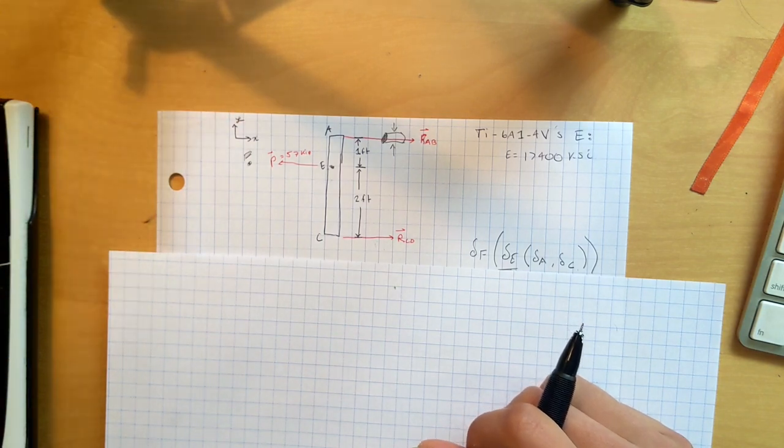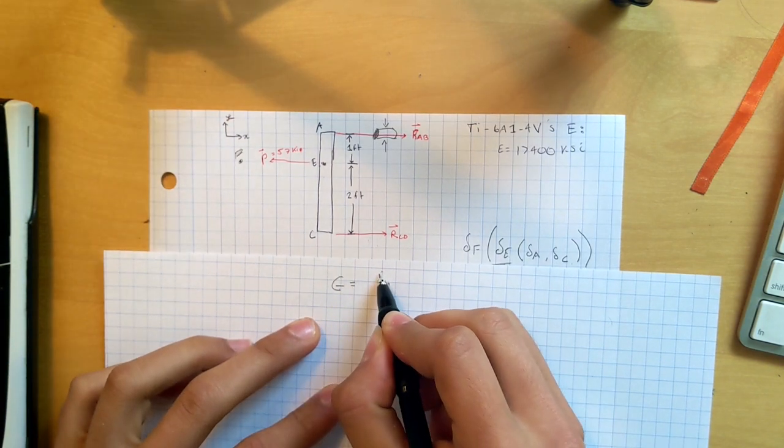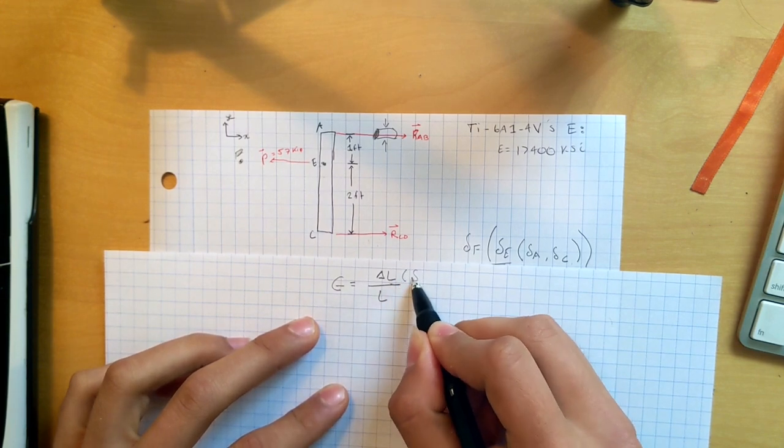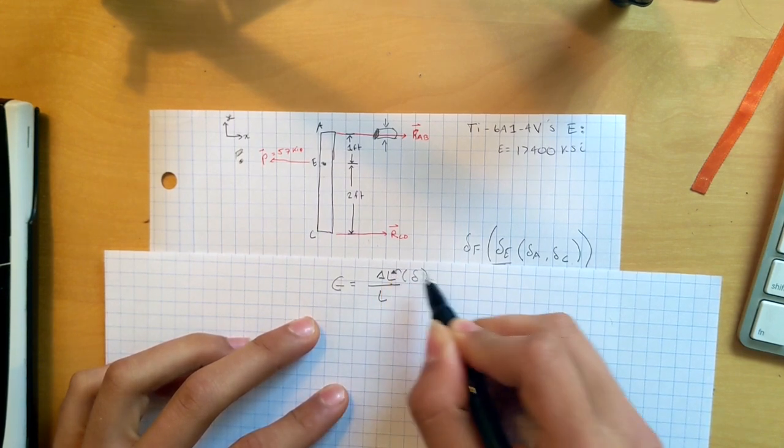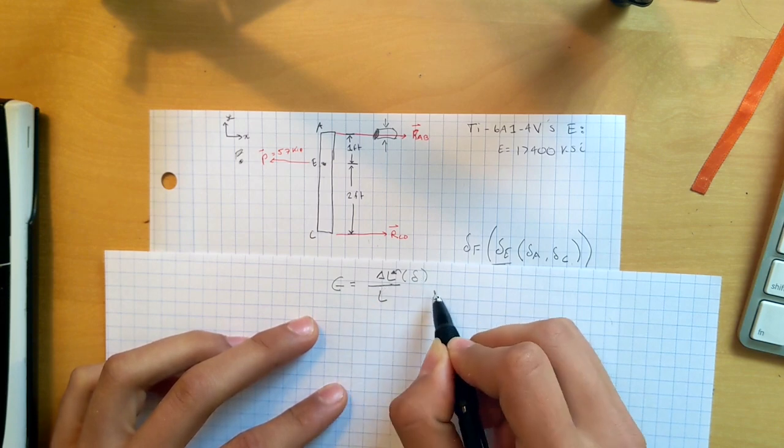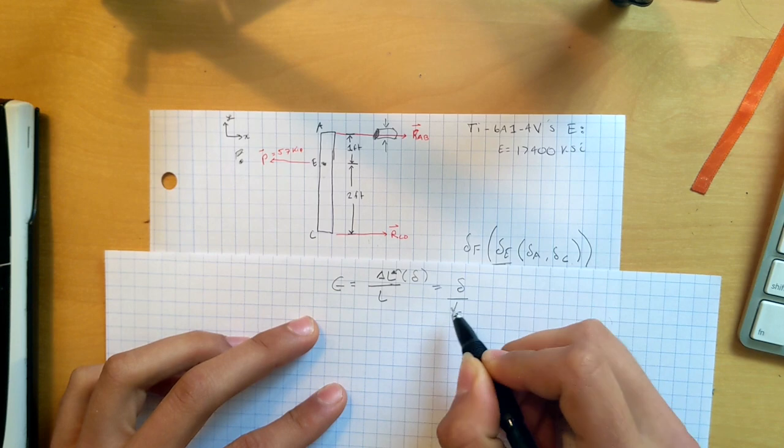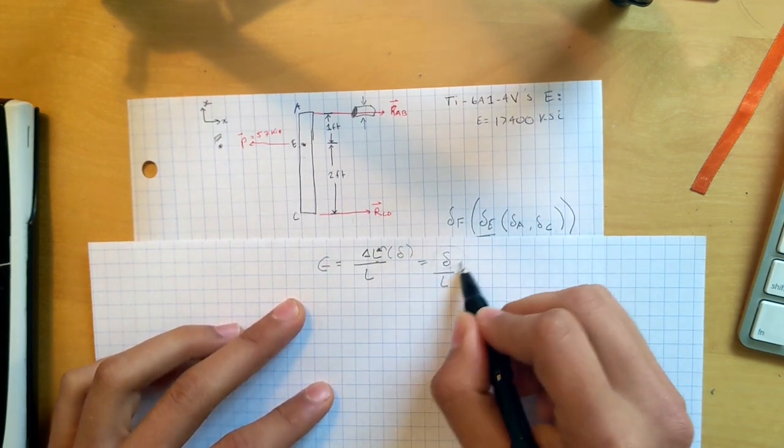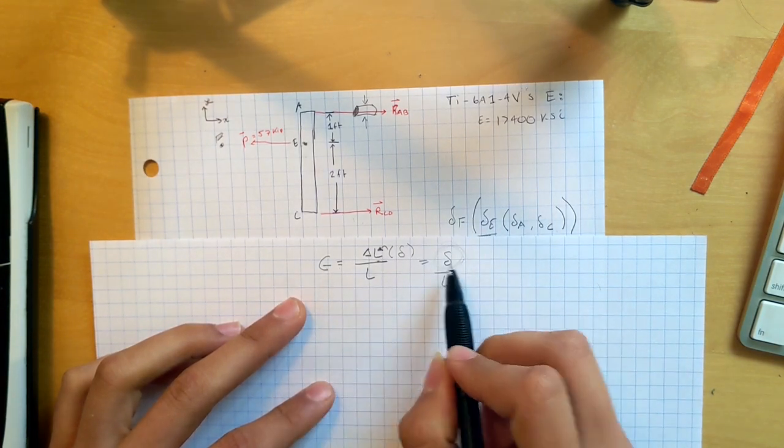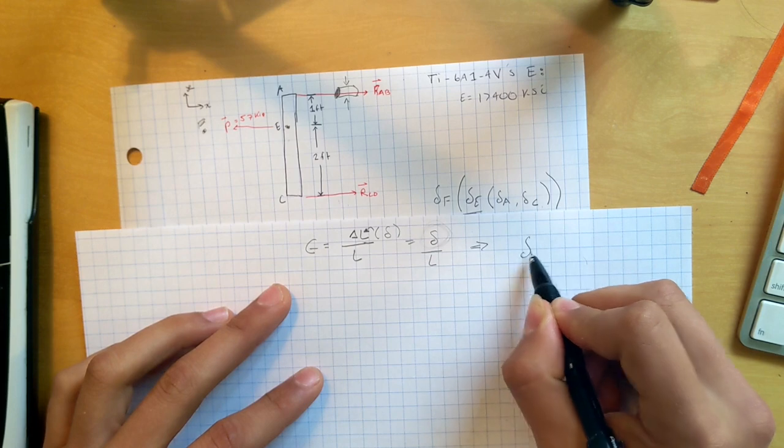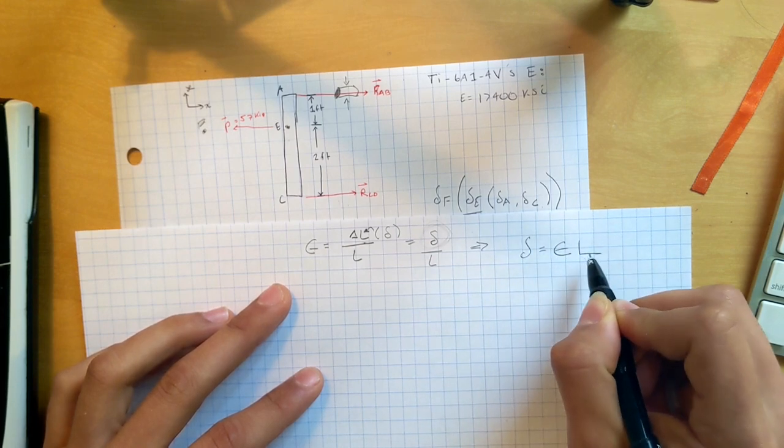Strain is change in length over the original length. For fanciness purposes, we're going to use this little jowt-jowt to signify the change in length. So we really want to find this guy. The change in length is what we're interested in. So if we just do some rearranging, we know that, boom, bang, bang.